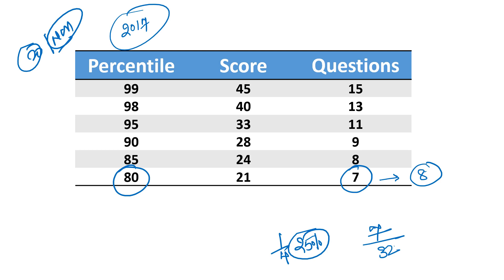So, if 2018 CAT is tough, one question will be down. If it comes at the same level, then 7 questions. If it comes easy, then your attempt count should go up — you need to keep this in mind. For 80 percentile, 7 questions is the target.